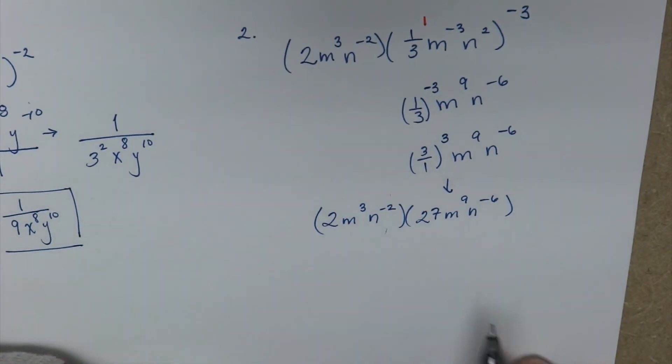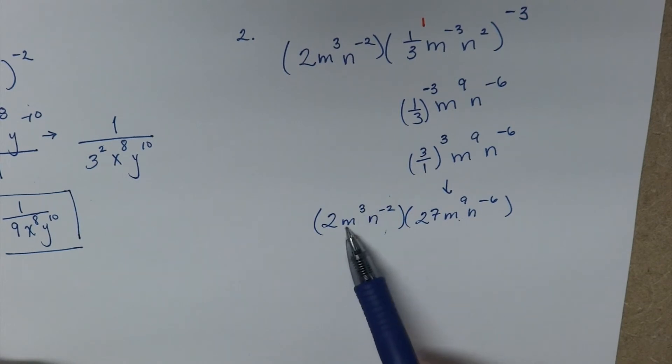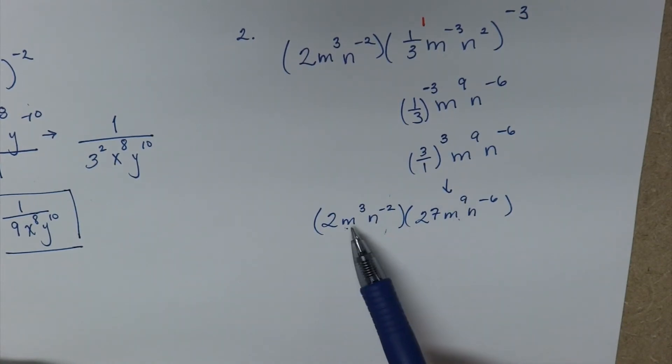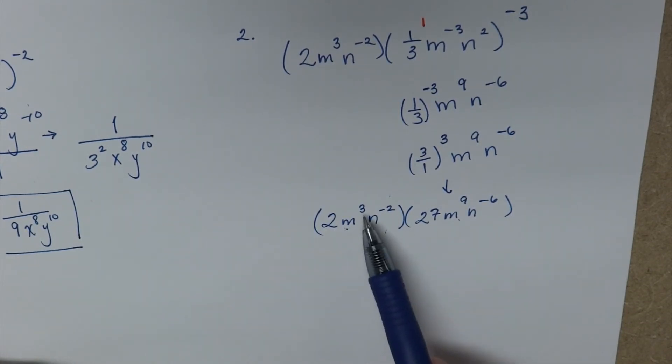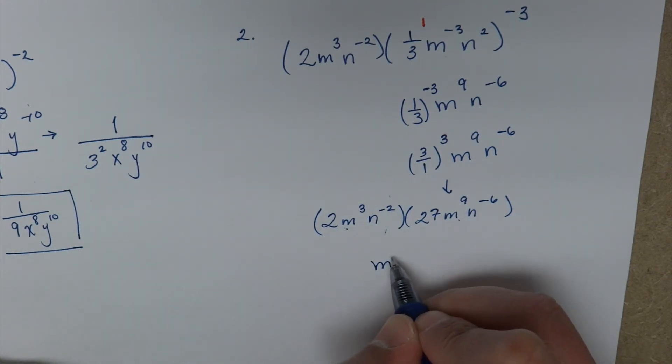Now you notice this becomes a little bit different because now we have 2 bases. We have 3 m's here, we have 9 m's there. Now we're not going to multiply, we're just going to add them. 3 and 9 is going to give us 12.